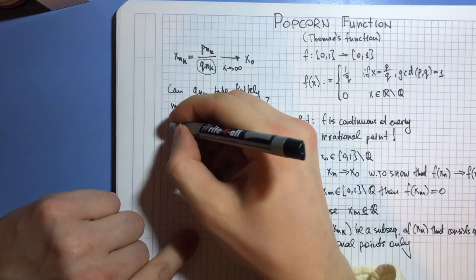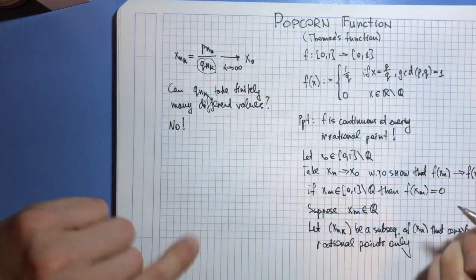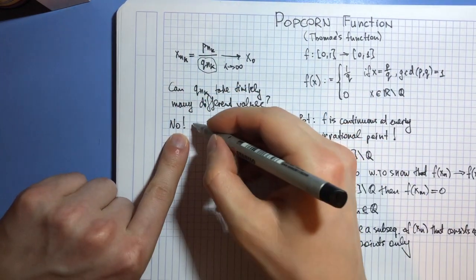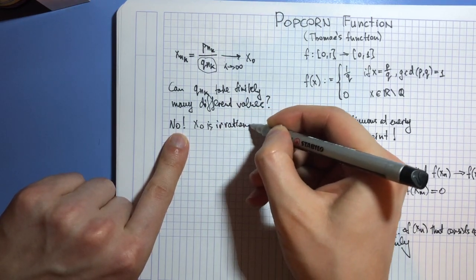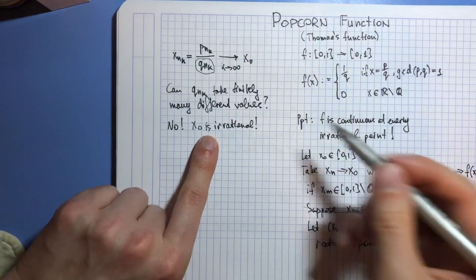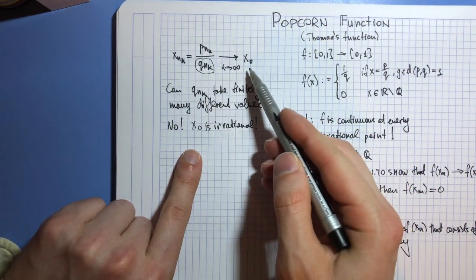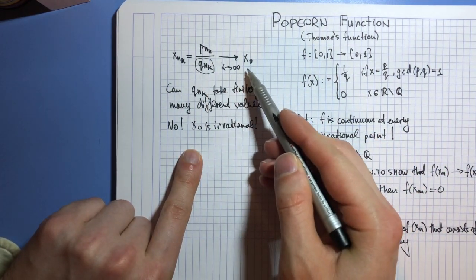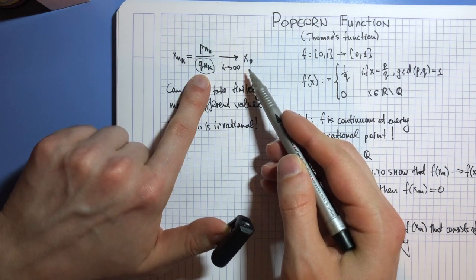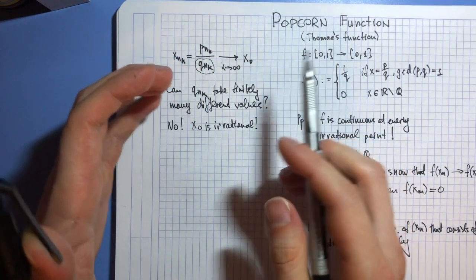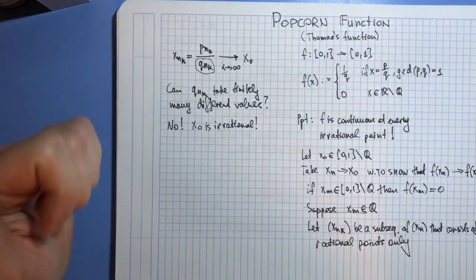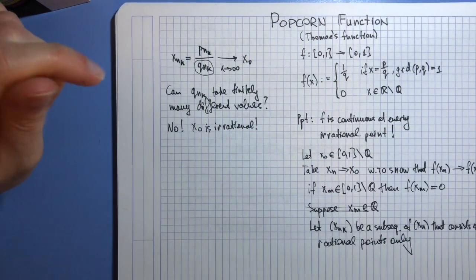Well, think about it. Of course it cannot be the case, because x₀ is irrational. If you want to approach it with a rational sequence, your denominator has to get bigger and bigger because you want to get more and more accuracy.